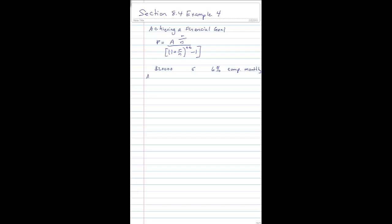So this means A is equal to 20,000, T is equal to 5, R is equal to 0.06, and N is equal to 12.